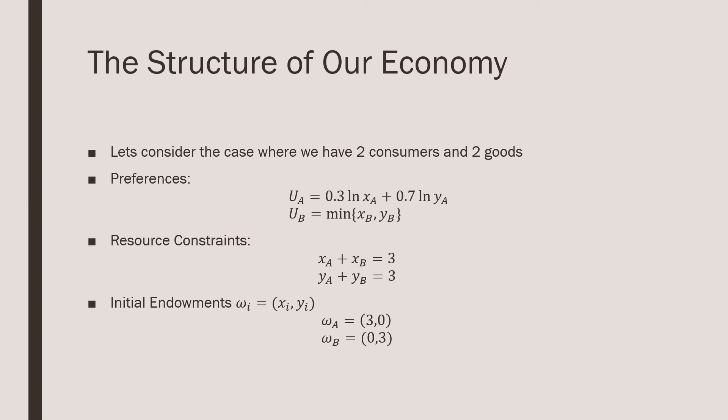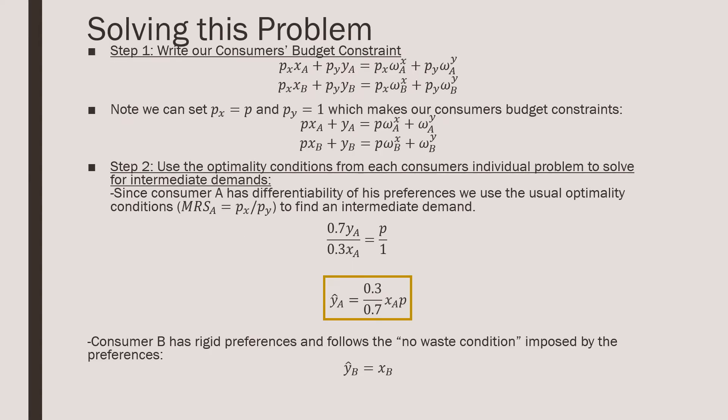Let's consider the case where we have two consumers and two goods. The preferences in this economy are defined as follows, with consumer A having these log preferences and consumer B having these Leontief sort of preferences. The resource constraints which define the size of this economy is that there's going to be a total of three of good x and three of good y. The initial endowments are that consumer A is going to have the entirety of good x and consumer B is going to have the entirety of good y.